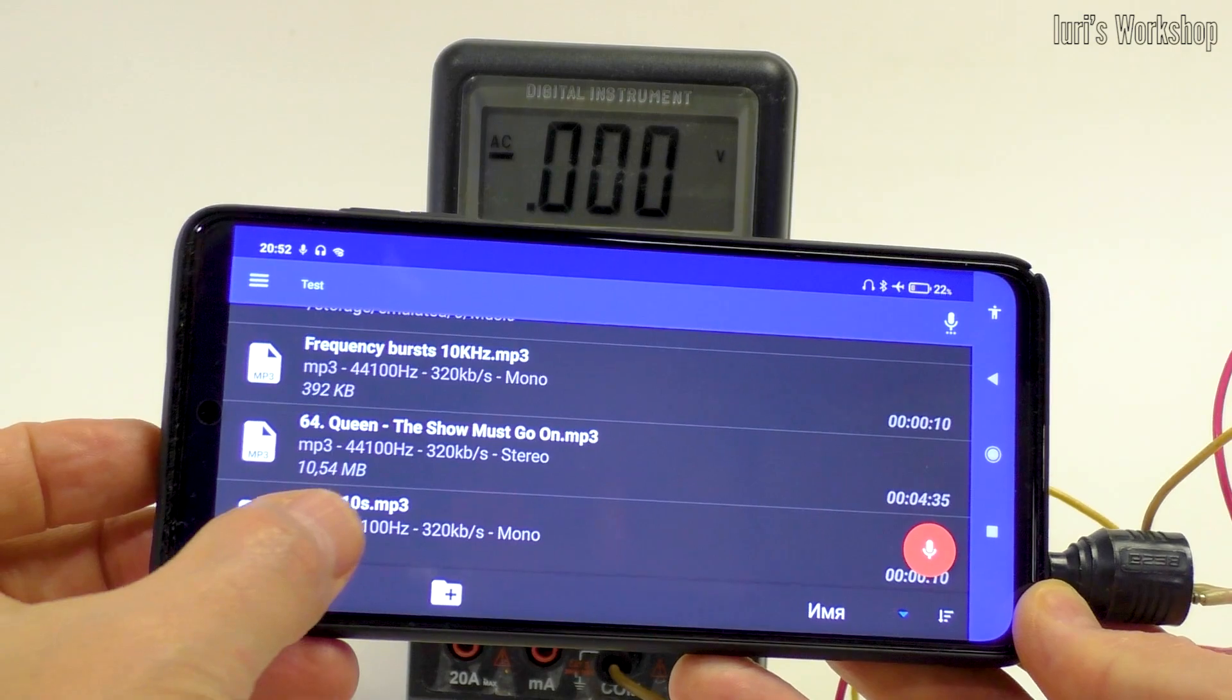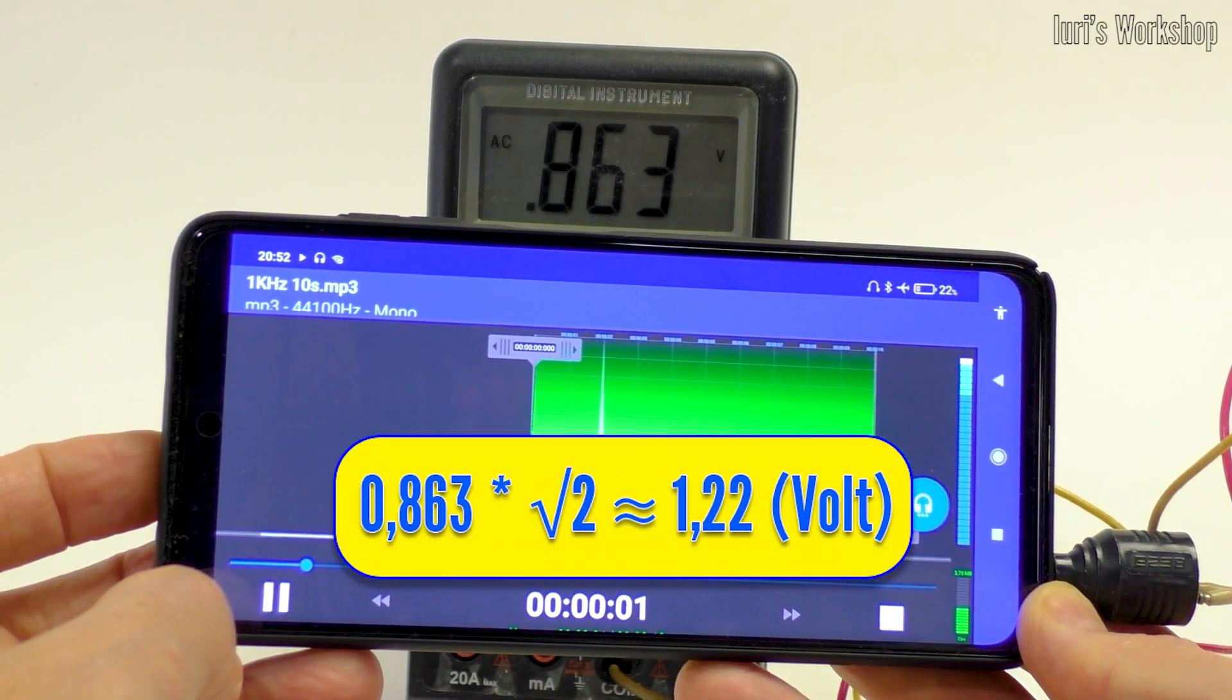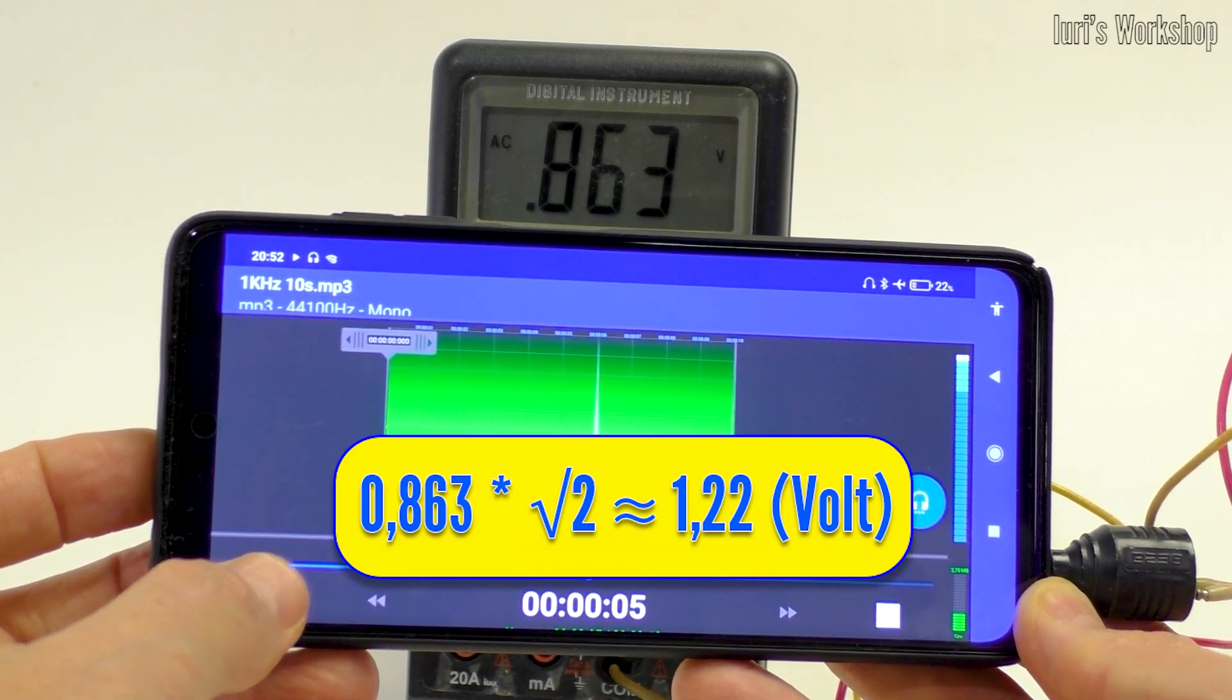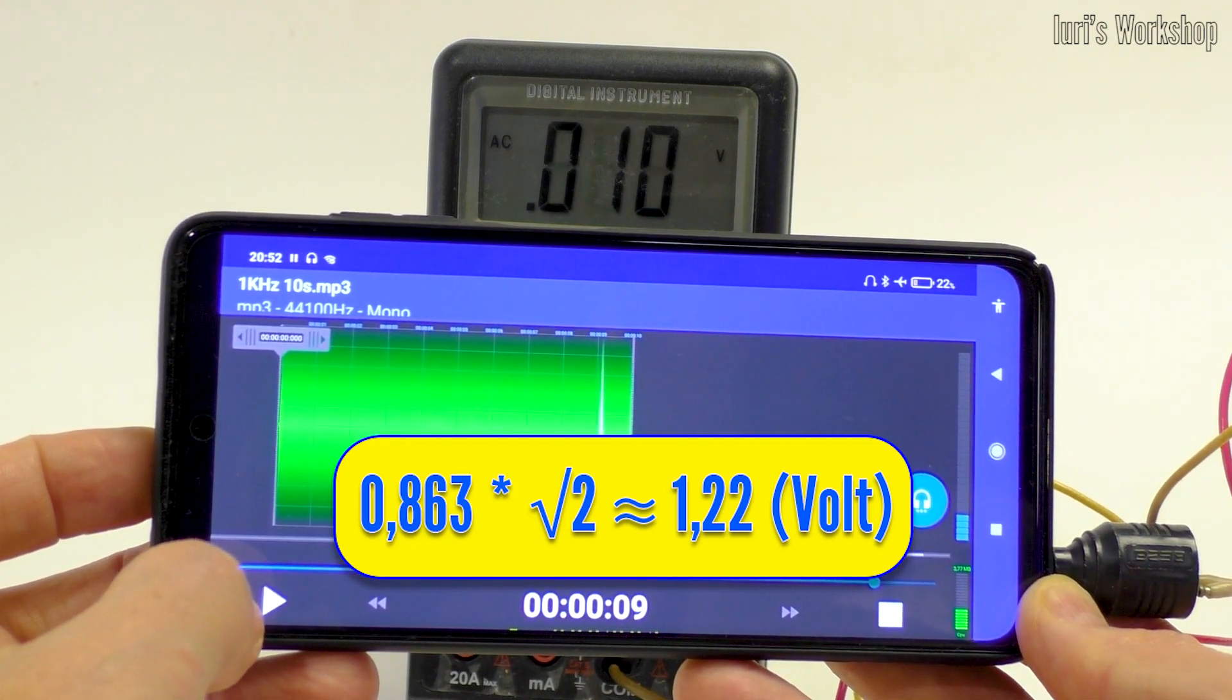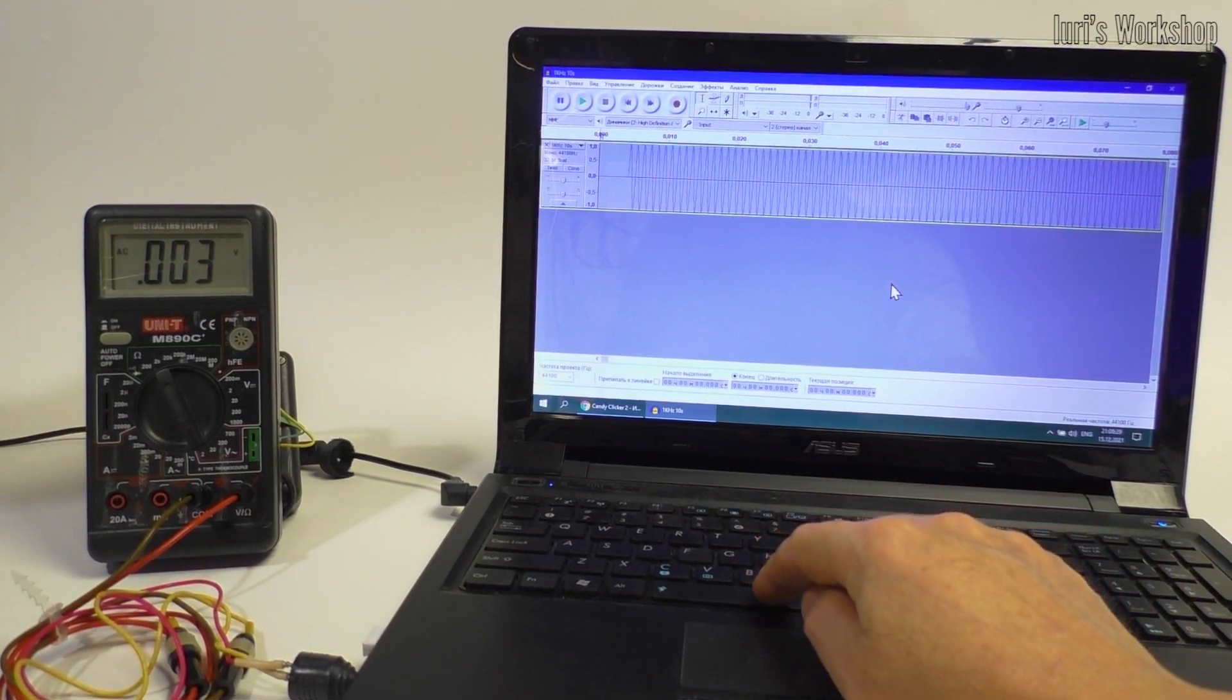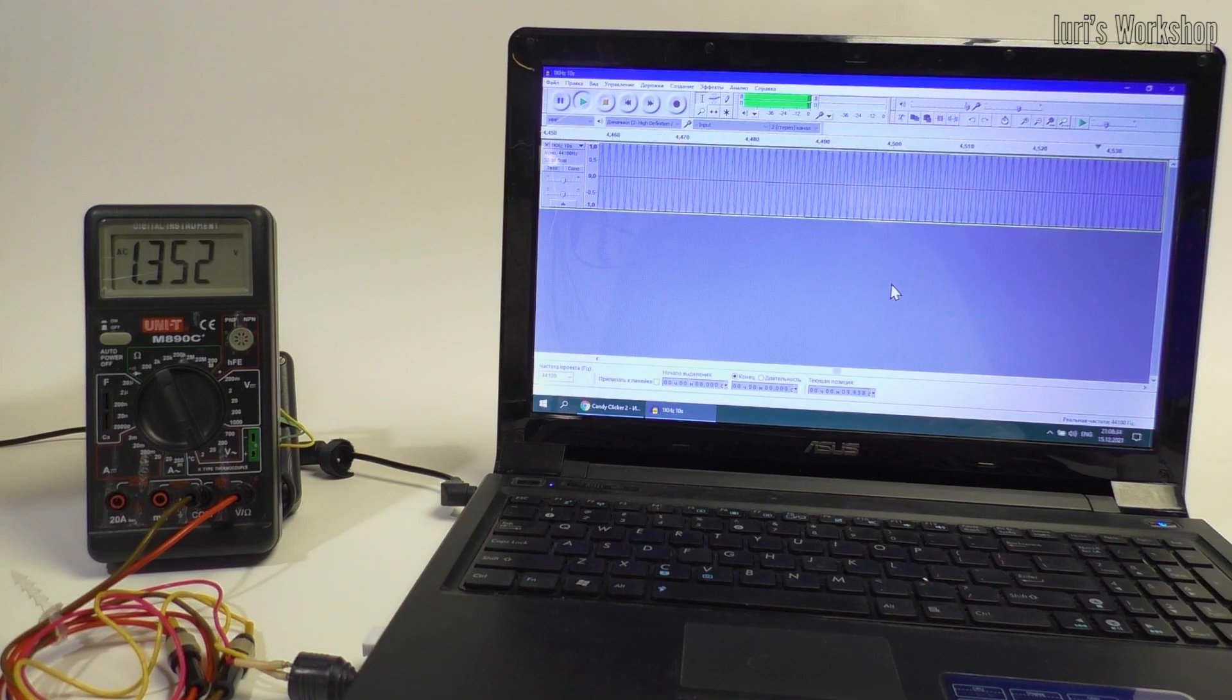For example, the amplitude of my smartphone's output signal is only 1.2 volts. To measure the amplitude value of the signal, you need to open an audio file in the player with a recording of a sinusoidal signal at a frequency of, for example, 1 kilohertz and measure it with a multimeter. The measurement result must be multiplied by the root of 2.